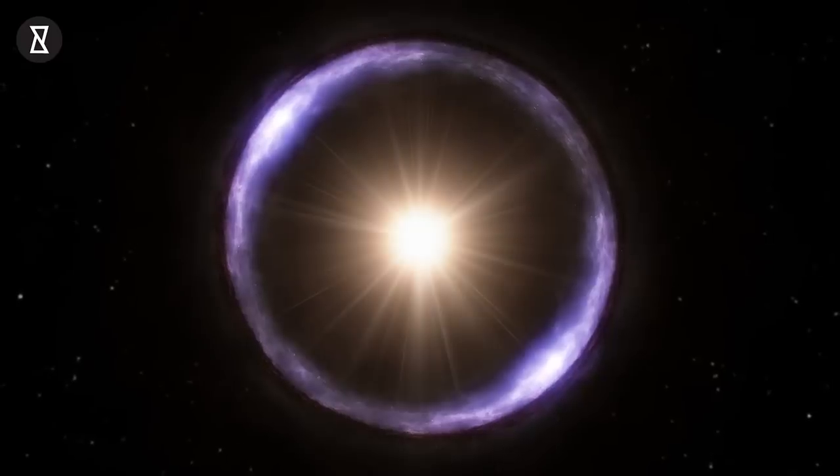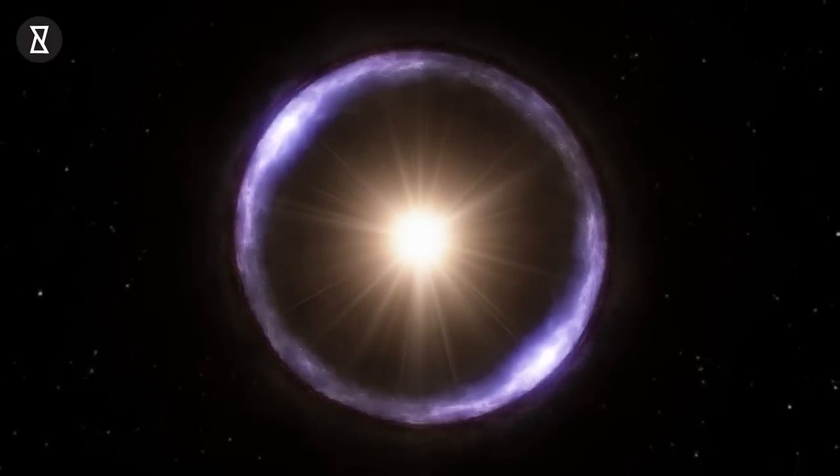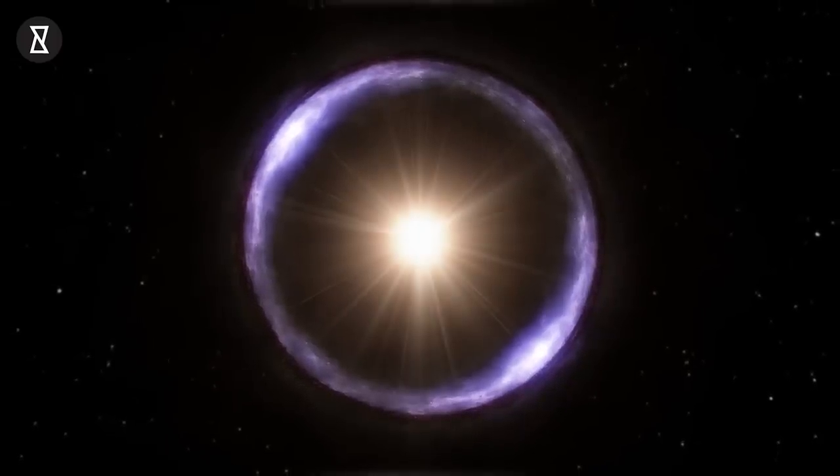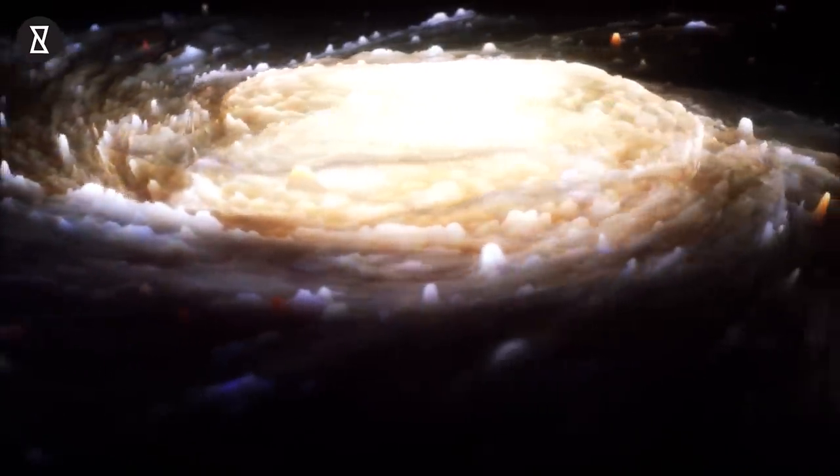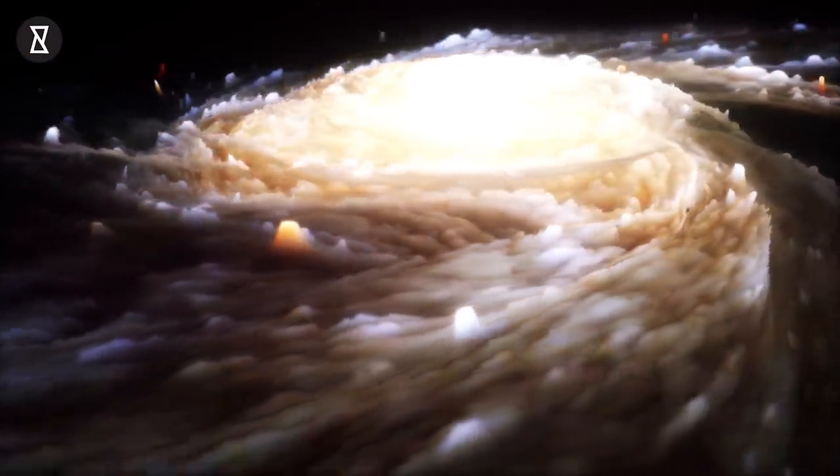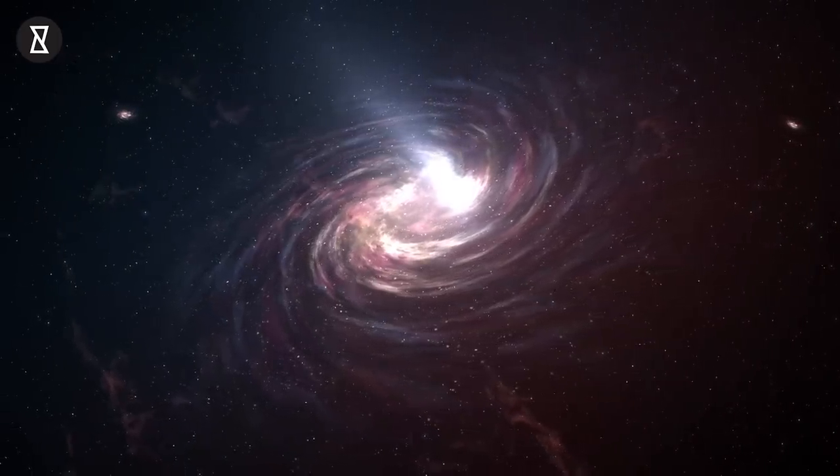An Einstein ring occurs when a distant galaxy has been magnified and wrapped into an almost perfect ring by a massive galaxy in front of it. Scientists tell us that we wouldn't be able to see this galaxy at all if it wasn't for the Einstein ring. Yes, the presence of Einstein rings, in addition to looking beautiful, allows us to study these otherwise almost impossible to see galaxies.